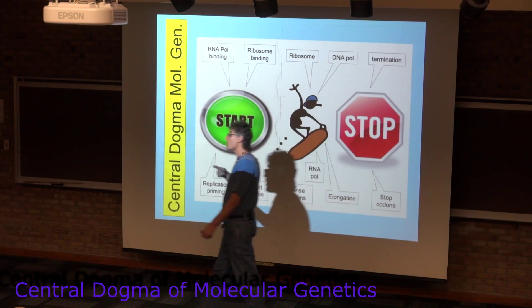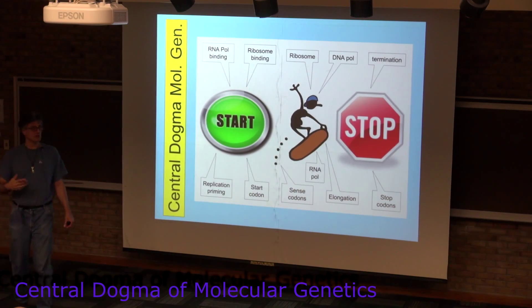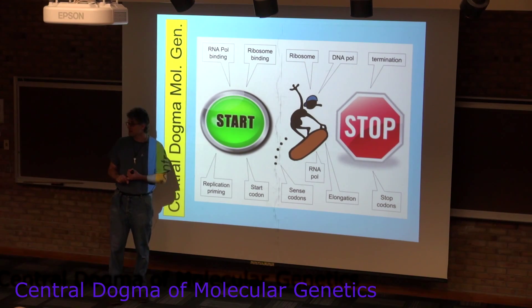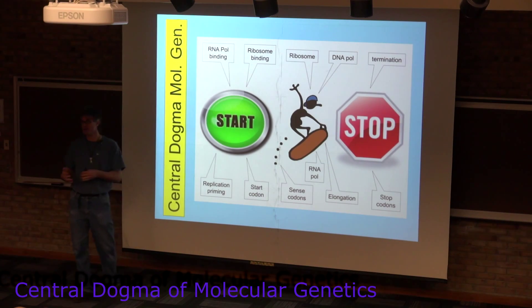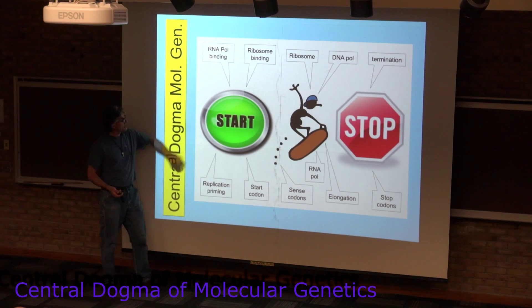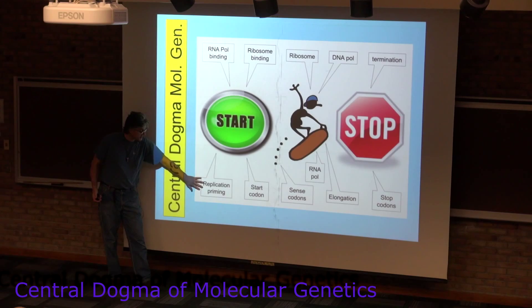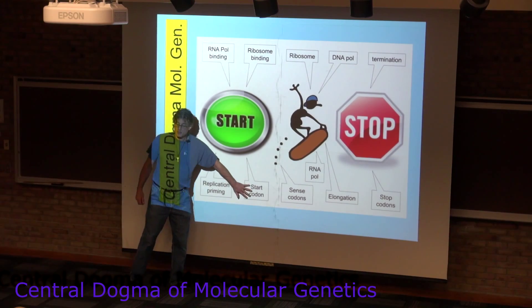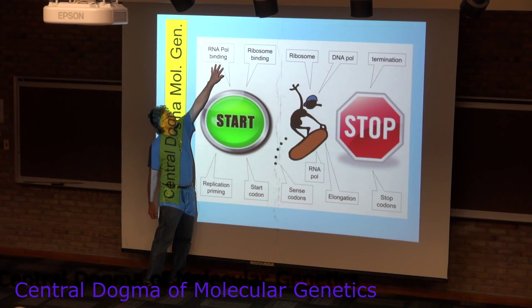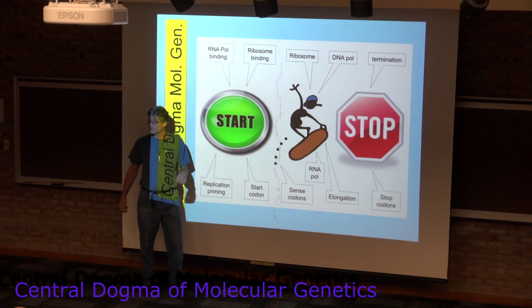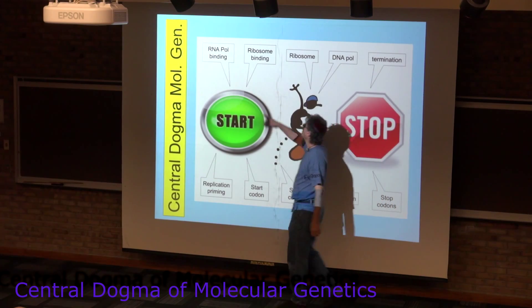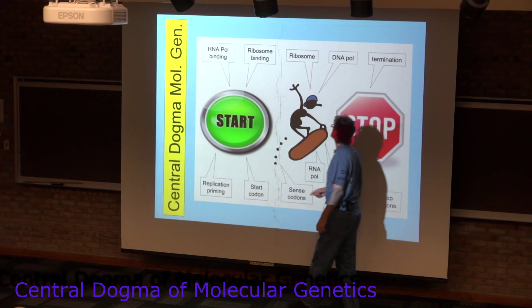When going through these different processes, you tend to dwell at least to some degree on start, elongation, and stop. In replication, you have something called priming that gets things started. In translation, you have start codons that get things started. In transcription, the RNA polymerase has to bind to the DNA. And in translation, you also have to have the mRNA binding to the ribosome itself.